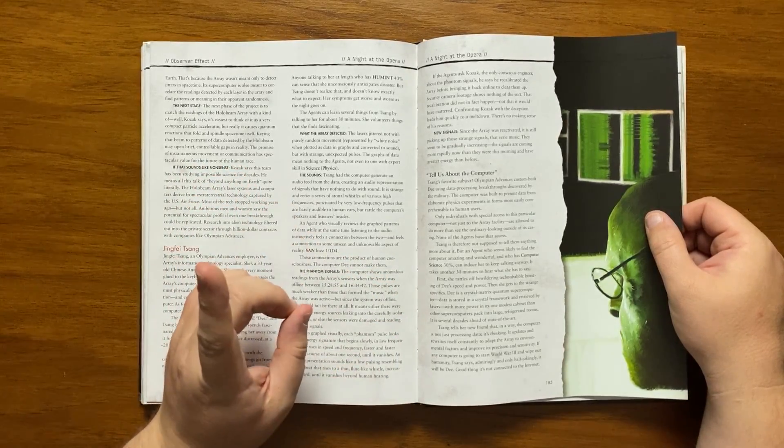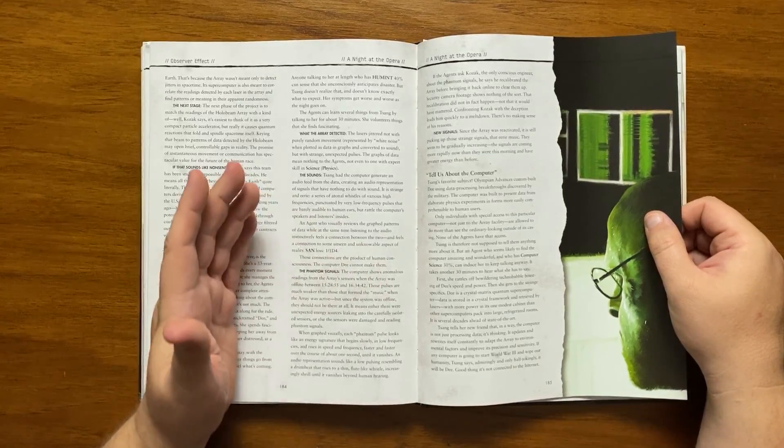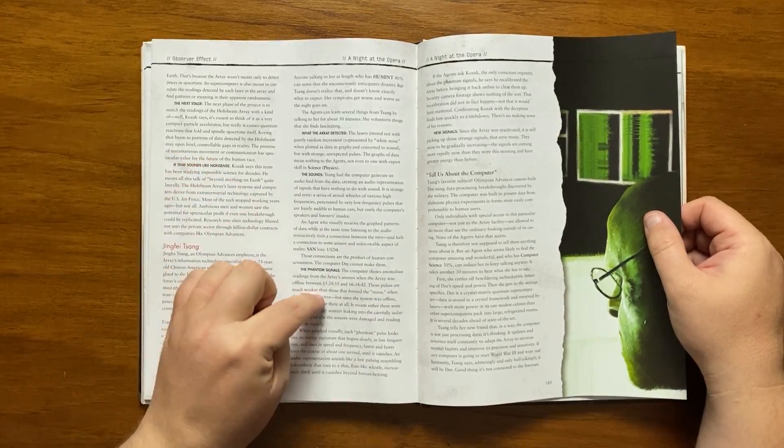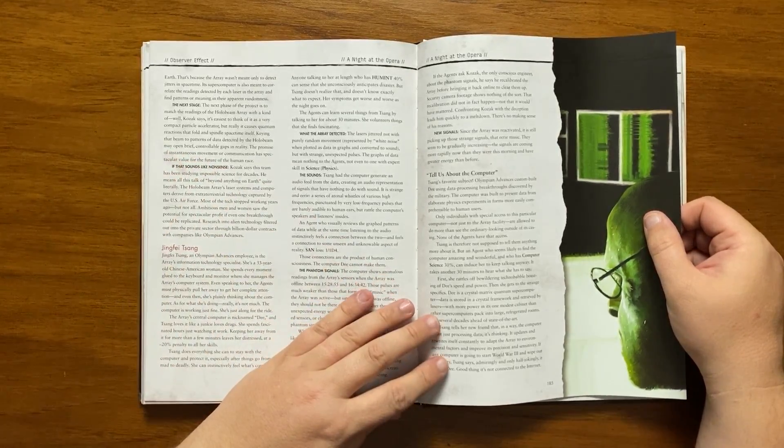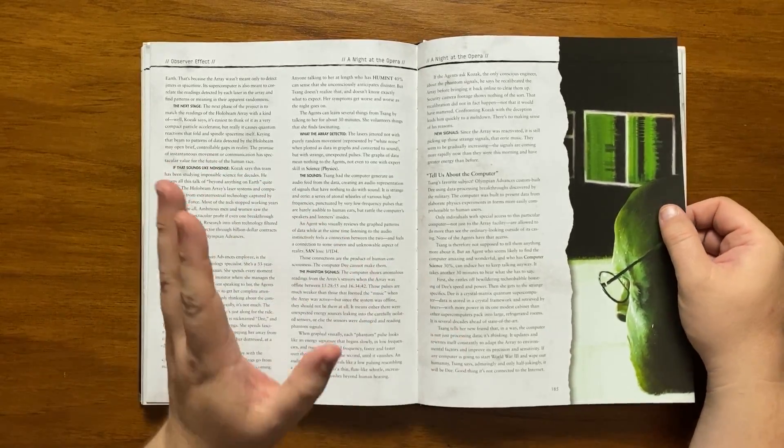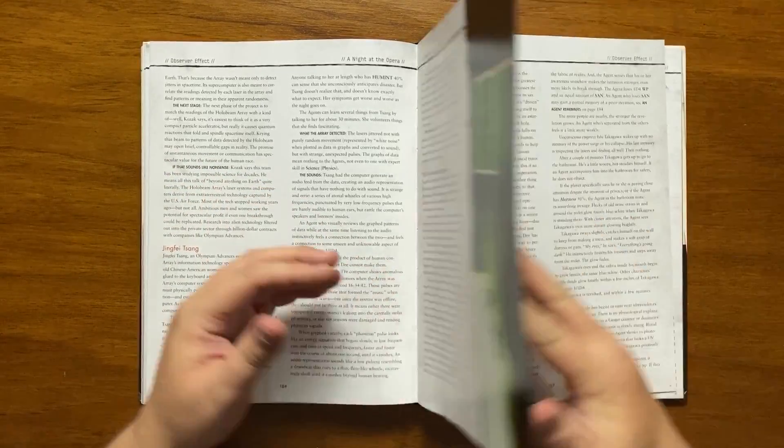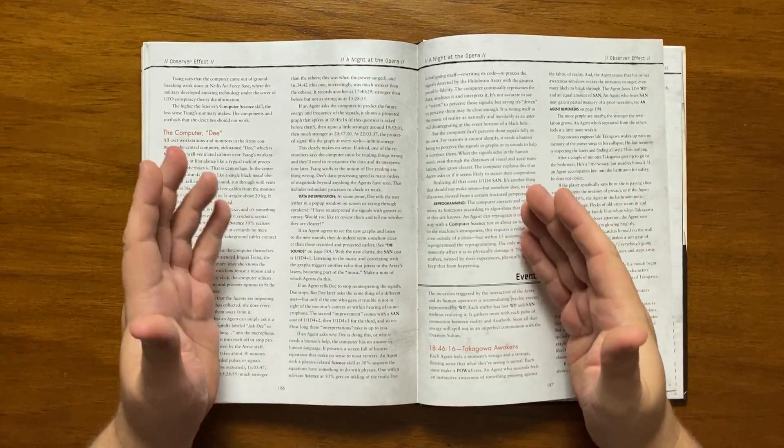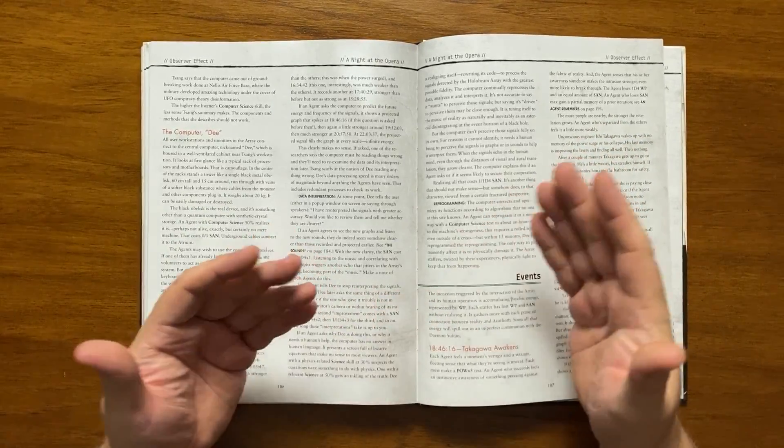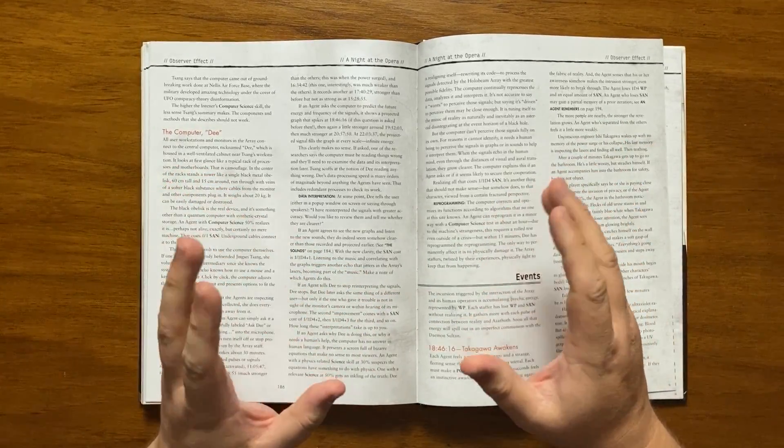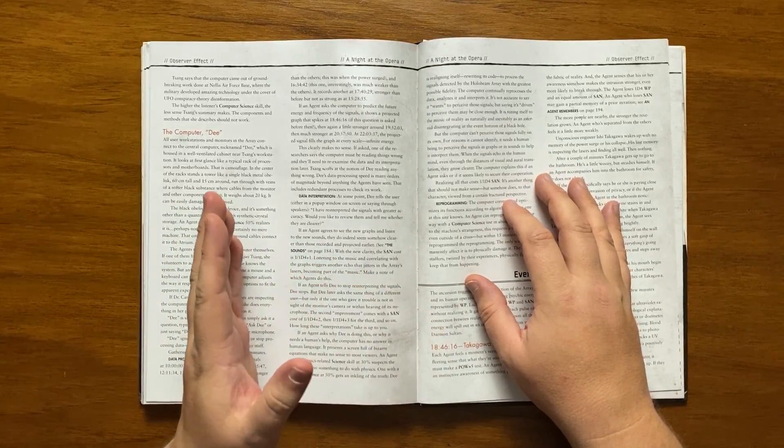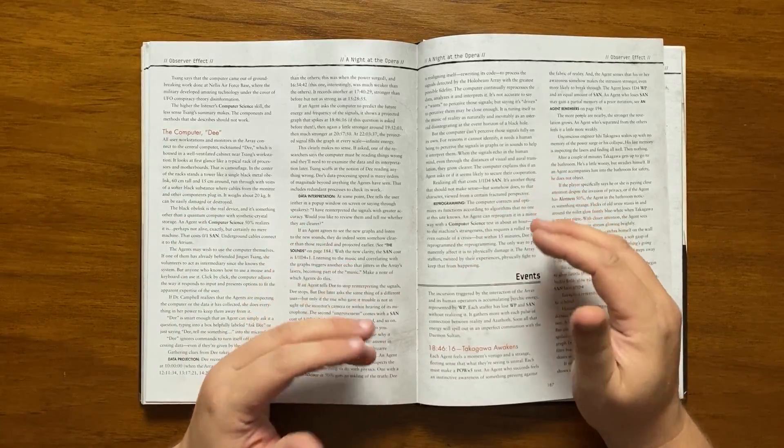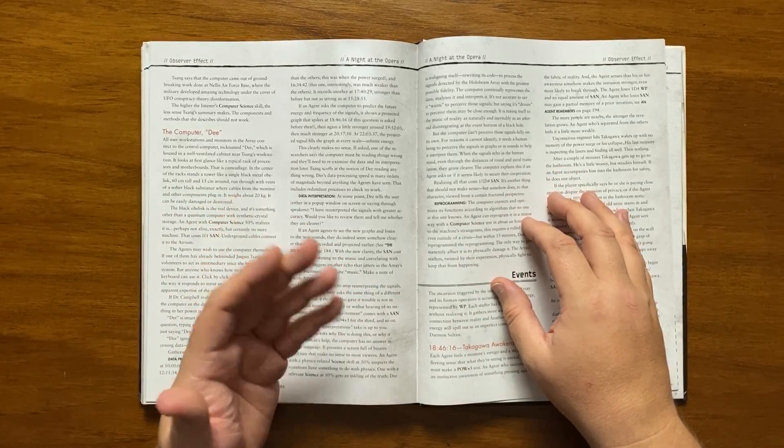She tells the agent that not only is D processing data but it is thinking. It constantly updates and rewrites itself to adapt to the array. Sang jokes that if any computer were going to wipe out humanity it would be D and that it is a good thing that it is not connected to the internet. She will happily explain that it came from groundbreaking work done at Nellis from UFO technology. We then move on to the supercomputer itself, D. All the workstations here connect to D which is housed in a ventilated cabinet near where Sang sits. A tertiary look at D reveals it looks just as one would expect with motherboards and racks of processors. This however is camouflage. In the centre of the racks is a tower-like single black obelisk around two feet tall, around which run veins of a softer black substance which components plug into. It's easily damaged and weighs around 20 kilograms.